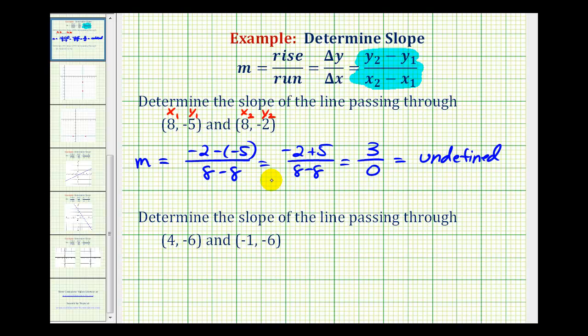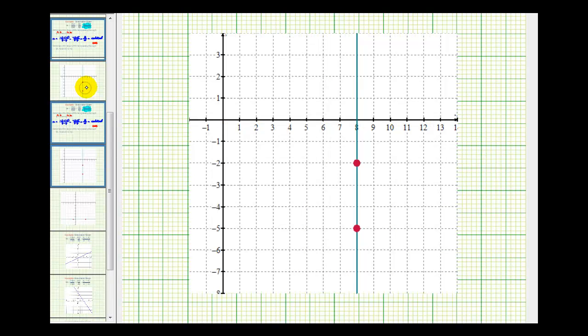In our online homework system, they want us to type in DNE for does not exist. If we take a close look at these two points, notice how the x-coordinates are the same. So if we look at the graph of this line, it would look like this. We can quickly recognize that this is a vertical line, in which we said the slope was undefined.